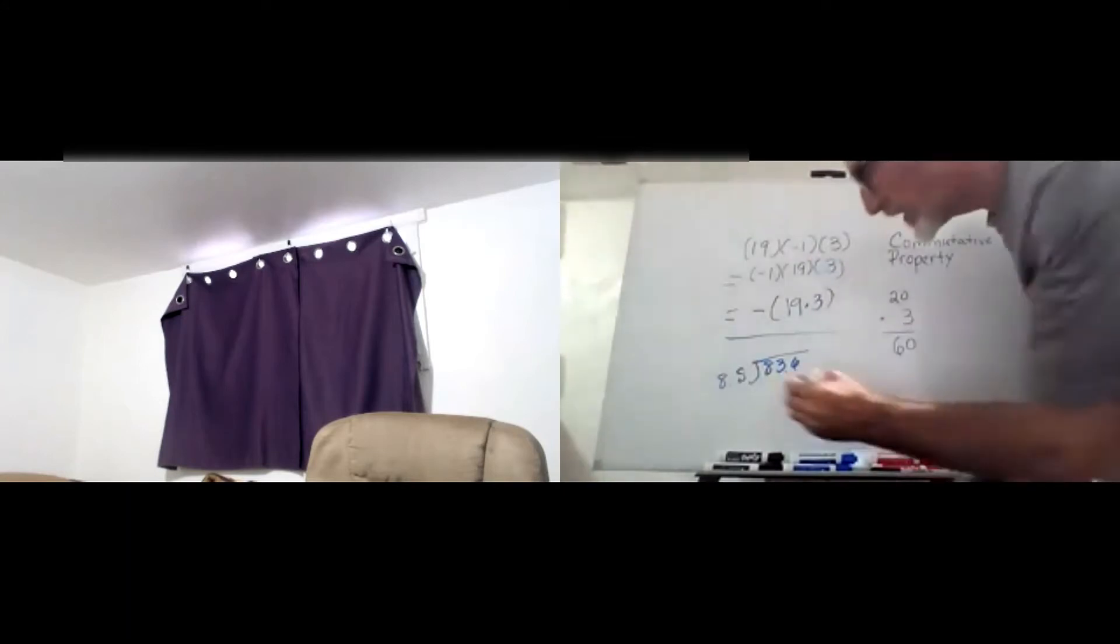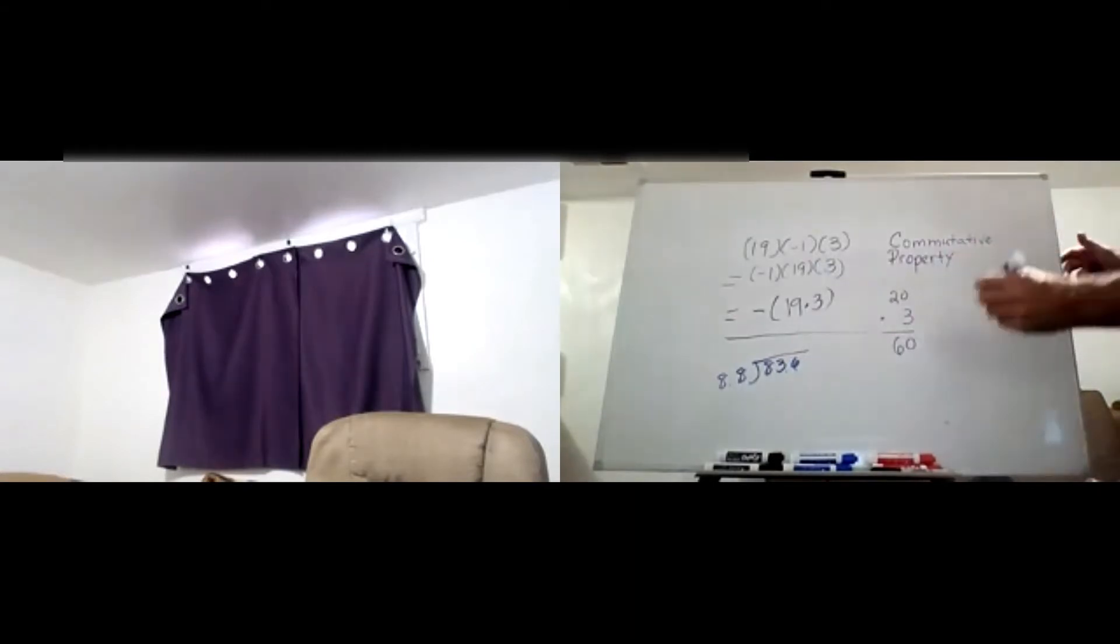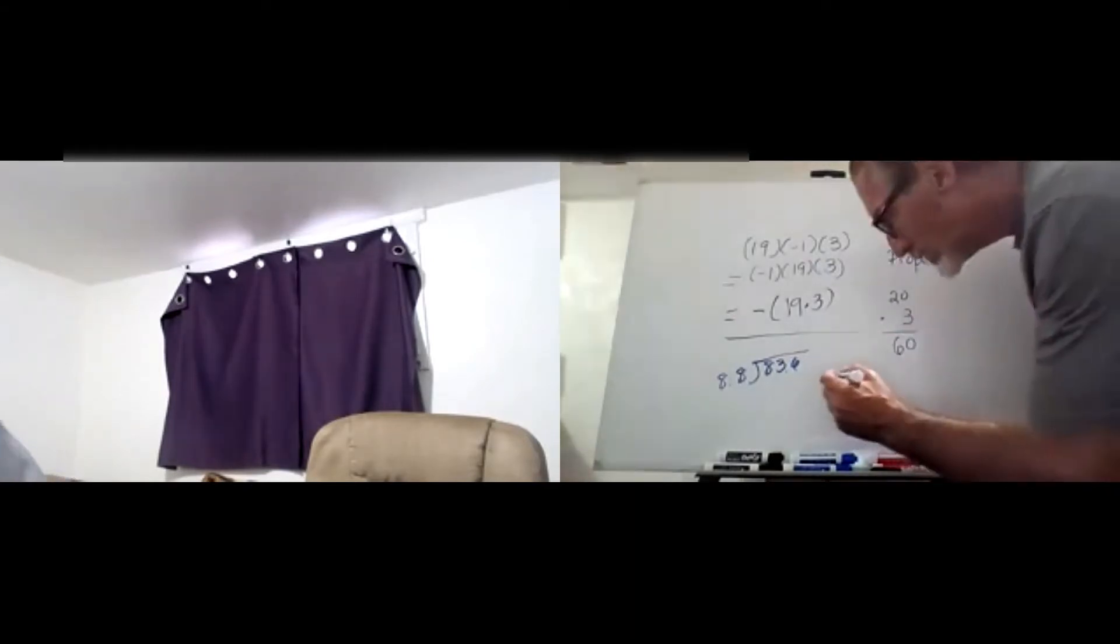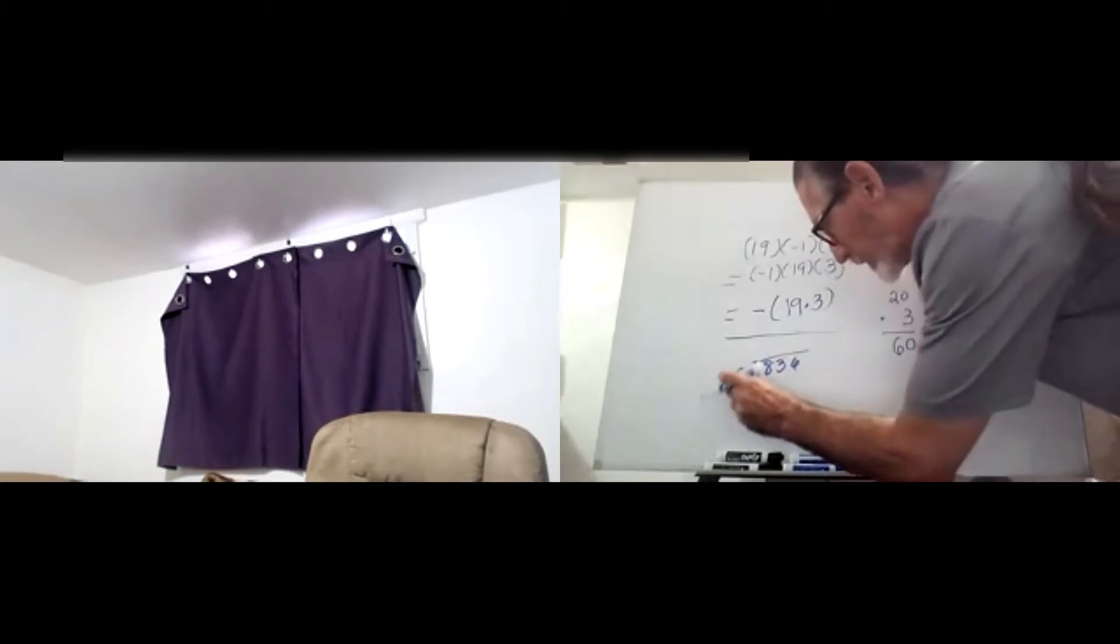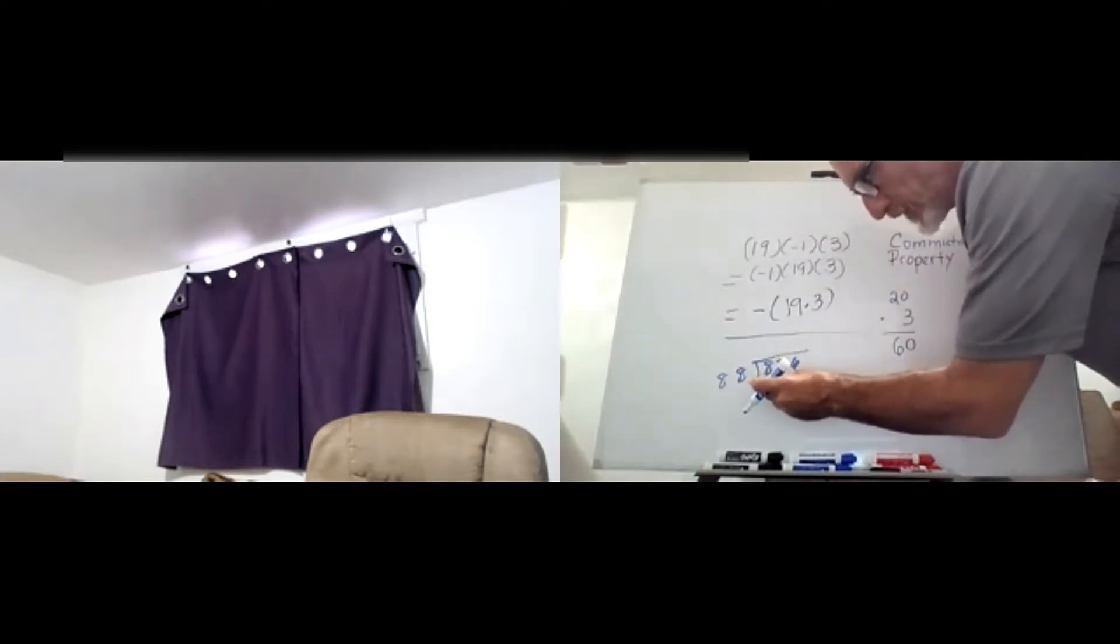That will be the same as 836 divided by 88. We won't have 88 going into 8 or 83, although this is close to 880. So instead of 88 going into 880 ten times, I'm going to try for 9 times - that 88 will go into 836 nine times.